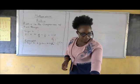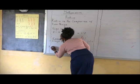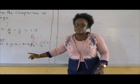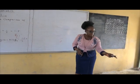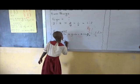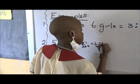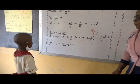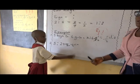Now I want to give you this one. We have five ratio twenty. We want to write it in the simplest form.